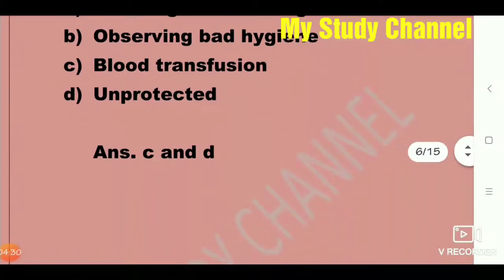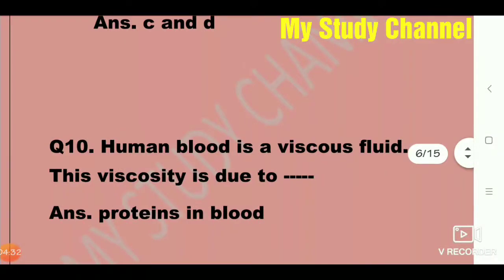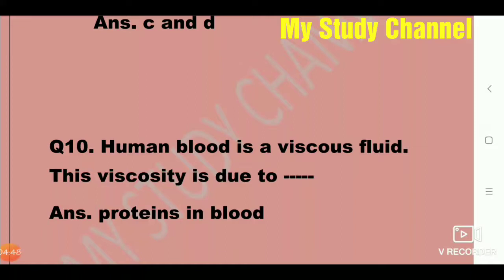Next question: Human blood is a viscous fluid. This viscosity is due to proteins in blood. Most important question — human blood is a viscous fluid and this viscosity is due to proteins in blood.